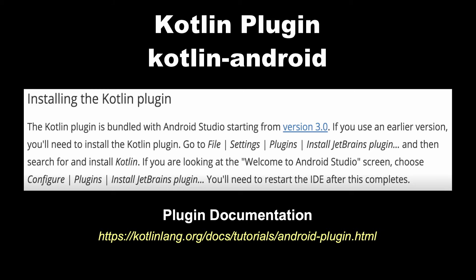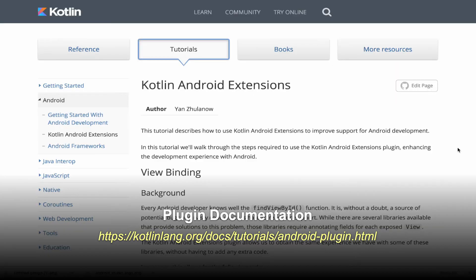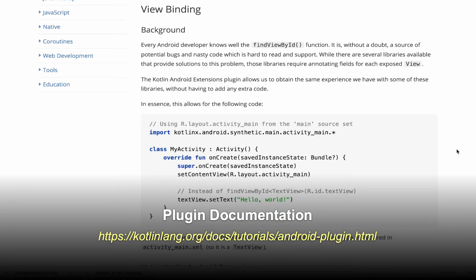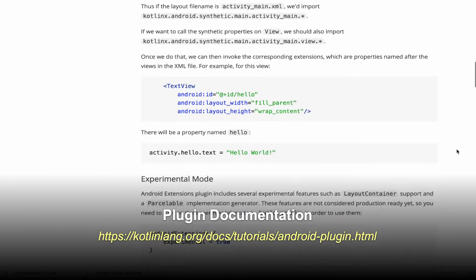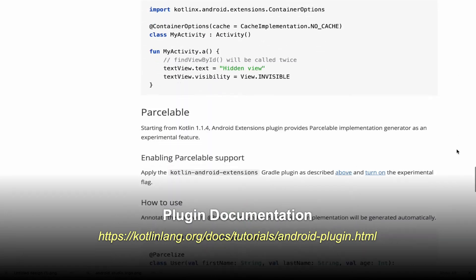The Kotlin plugin is what allows Android Studio to recognize and support the Kotlin programming language. This plugin should be bundled with Android Studio starting from version 3.0, meaning if you're creating a new Android Studio project you shouldn't have to worry about manually adding it. The Kotlin Android extensions plugin also added for us provides additional Android-specific functionality on top of the standard Kotlin plugin. You can check out the documentation page to view a full list of the features it provides, though if you're just starting out you might want to hold off on diving too deep into some of these features.